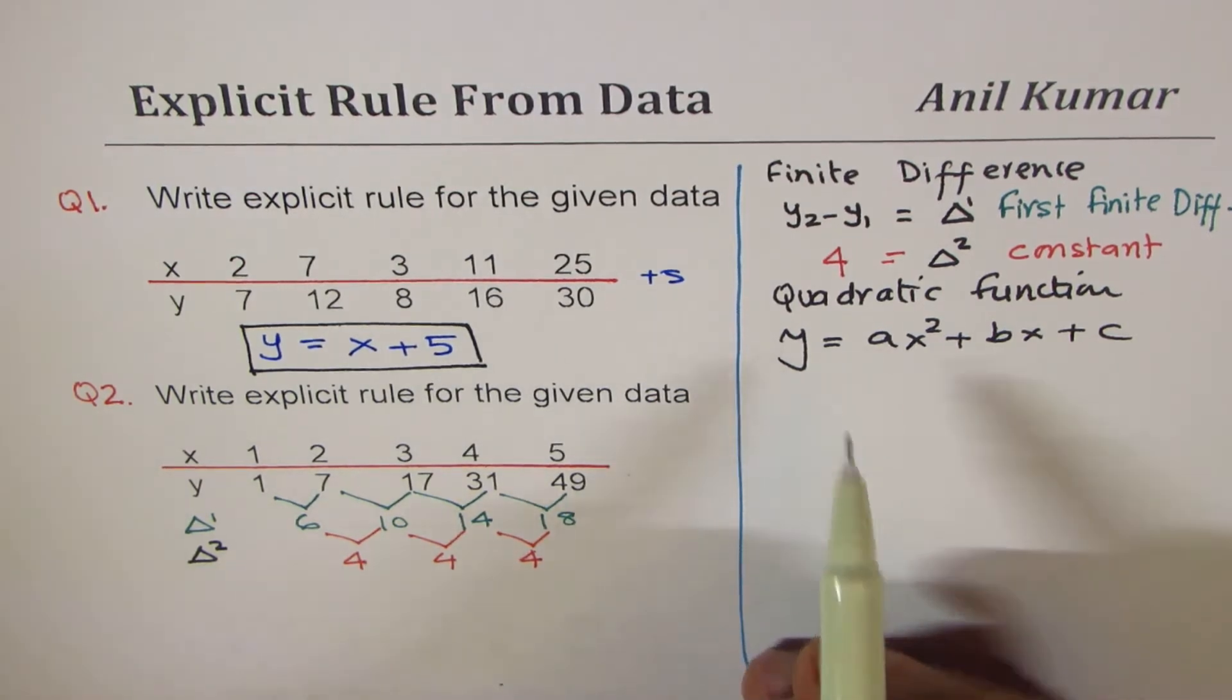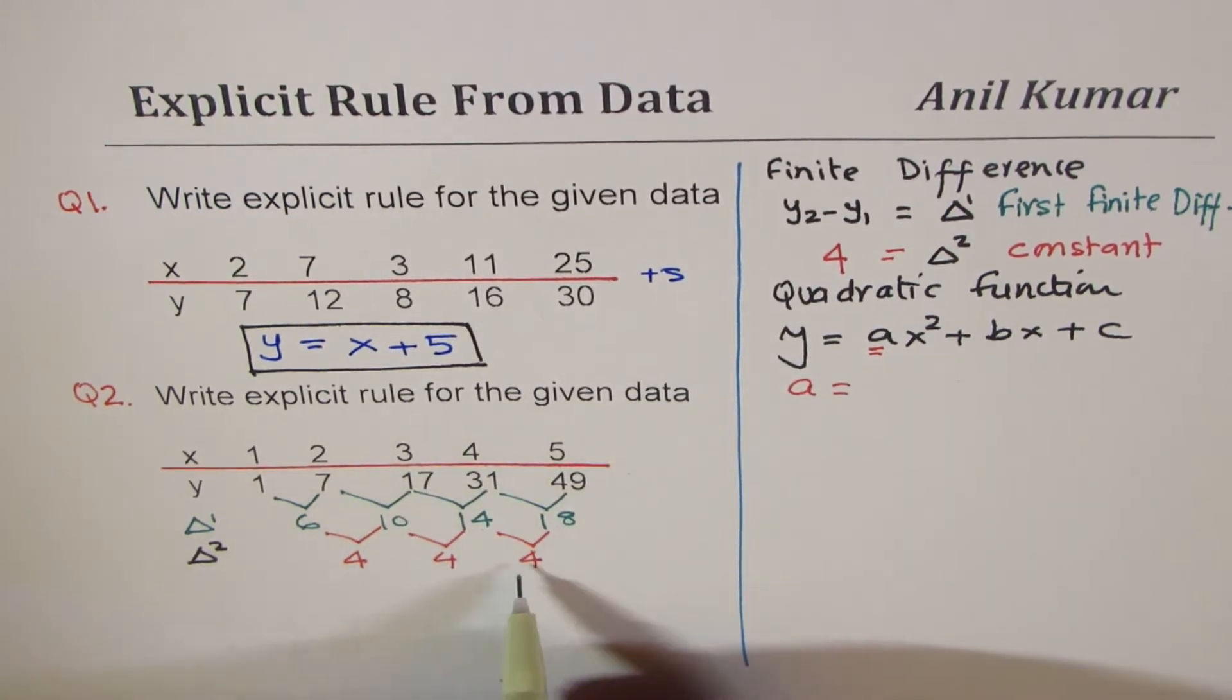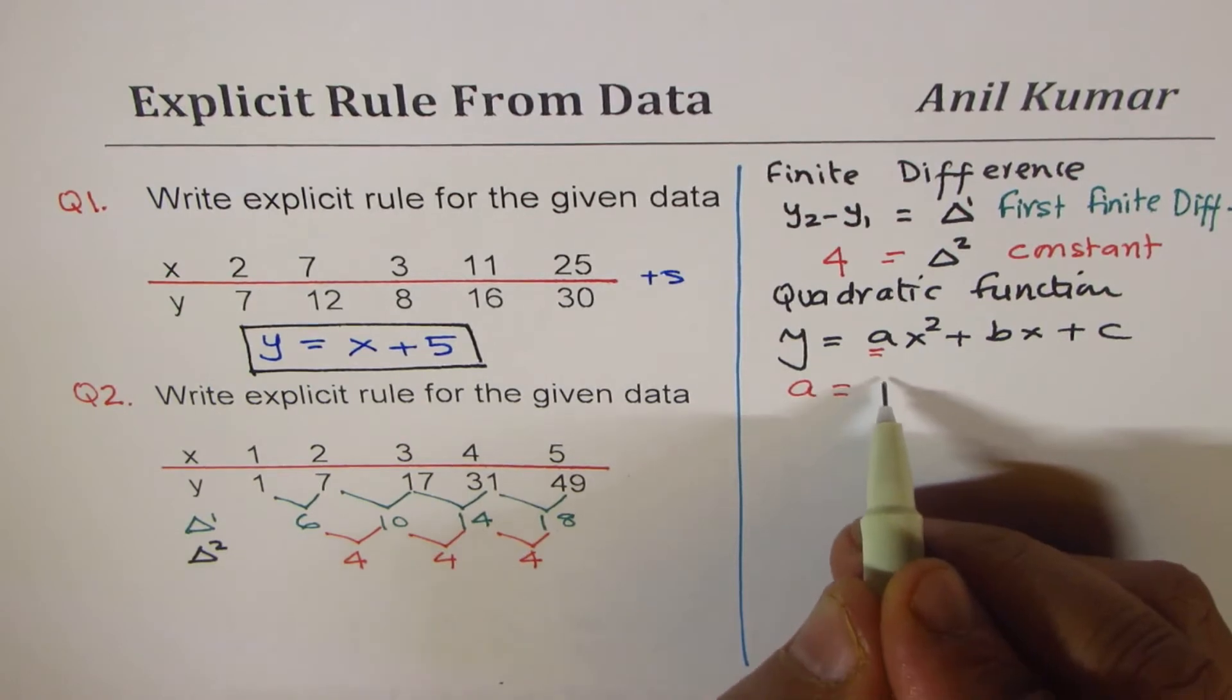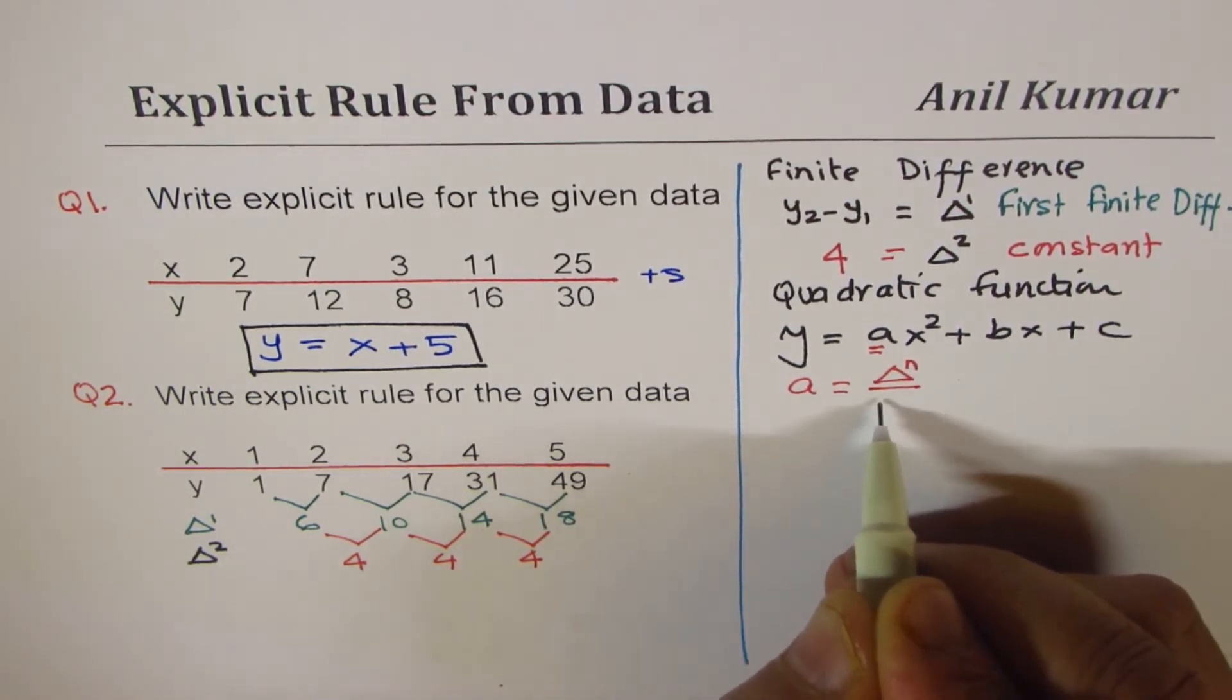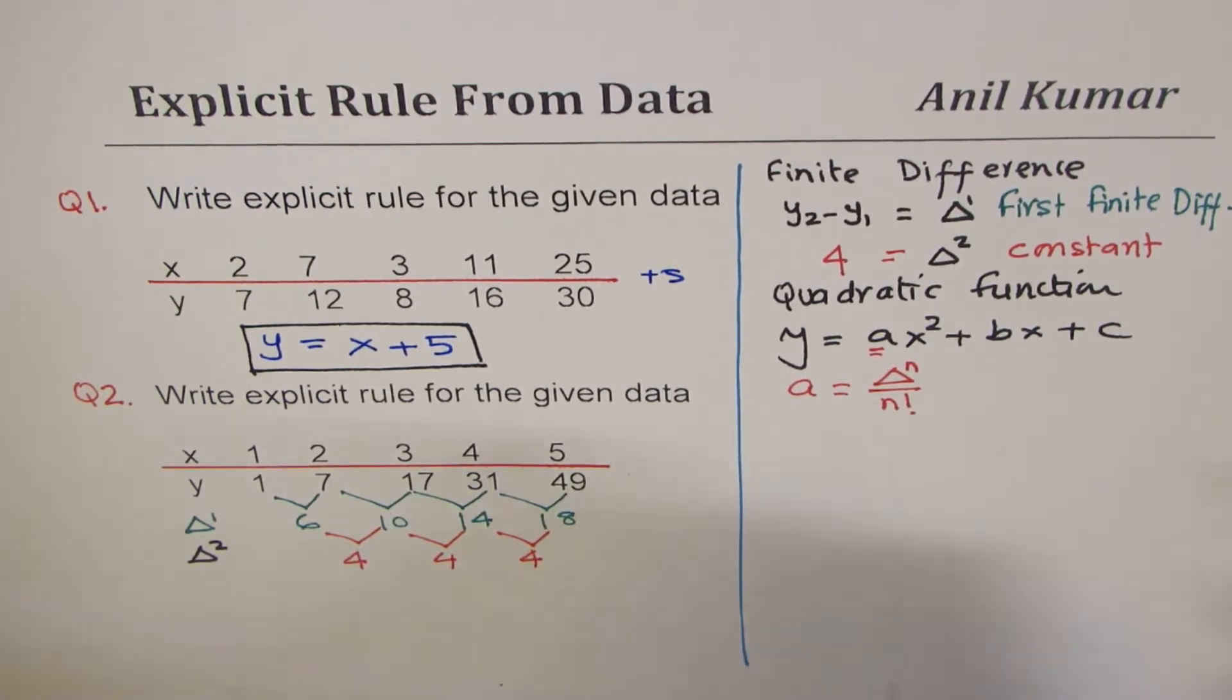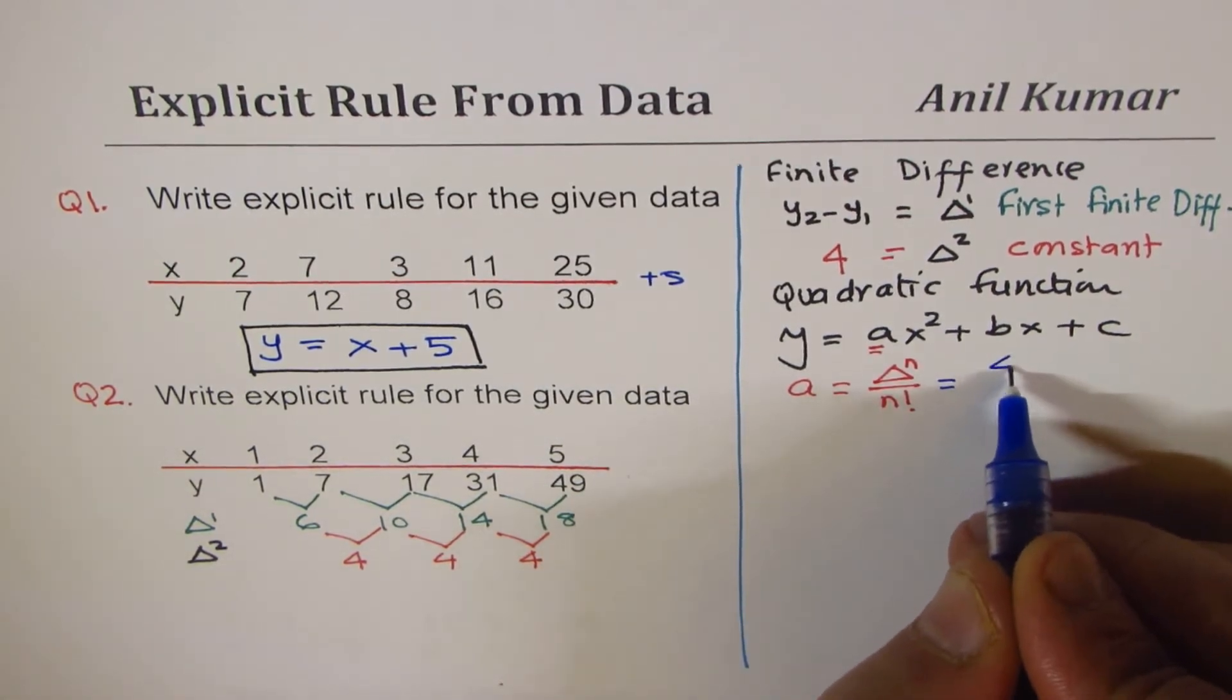The second way is, if you know the trick: we can find the leading coefficient a if we know the finite difference. Since the second finite difference is constant, the formula basically is nth finite difference over n factorial equals a. In our case, we know it is the second finite difference constant, so we'll divide 4 by 2 factorial.